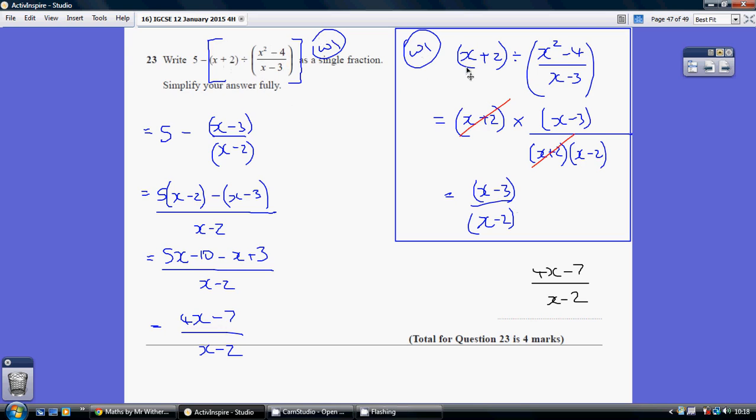So just focusing on x plus 2 divided by x squared minus 4 over x minus 3. Now remember when we're dividing by a fraction it's the same thing as multiplying by the fraction reversed.